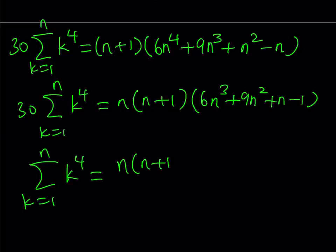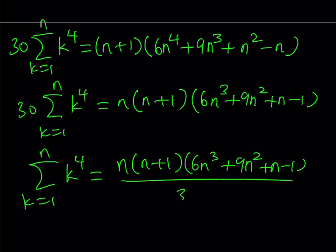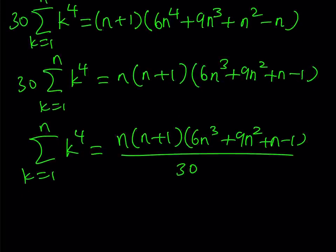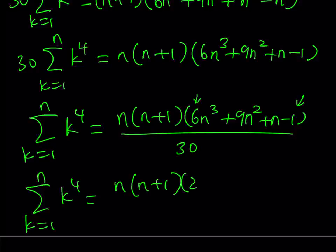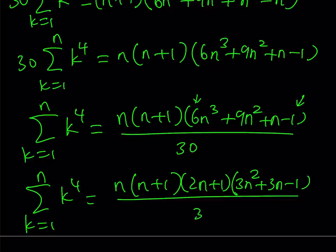Notice that n is also a common factor inside, so we get n times n plus 1 times 6n cubed plus 9n squared plus n minus 1. We're almost done — dividing both sides by 30 gives us the expression n times n plus 1 times 6n cubed plus 9n squared plus n minus 1, all over 30. And that cubic factor is actually factorable: using the rational root theorem with factors of 1 divided by factors of 6 as candidates, we find that negative one-half is a root, so we can factor out 2n plus 1. This gives us the final factored form for the sum of the fourth powers.